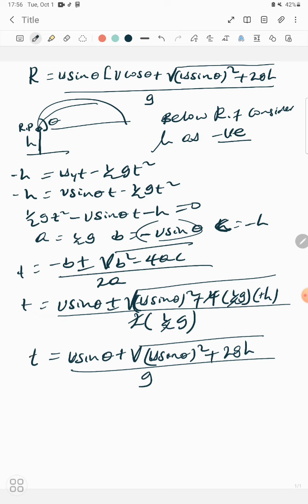Therefore, the range is: R equals u initial along x times t, which is u cosine theta times u sine theta plus square root of u sine theta the whole squared plus 2gh, all over g.